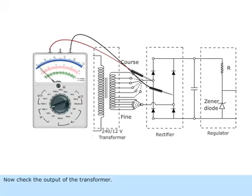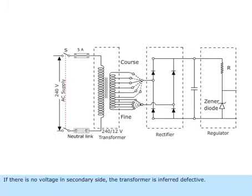Now check the output of the transformer. If there is no voltage in the secondary side, the transformer is therefore defective. Replace the transformer.